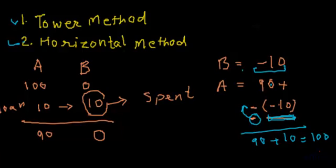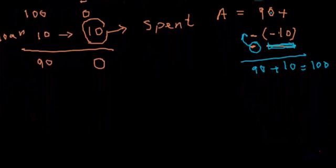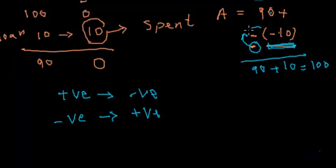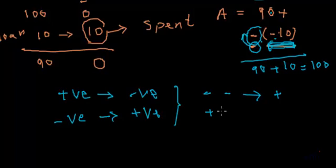What we learn from this is: when we subtract, a positive term becomes negative and a negative term becomes positive. We subtracted a negative loan — which is money given to someone that will come back — and negative times negative becomes positive.